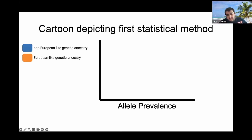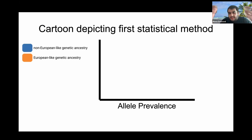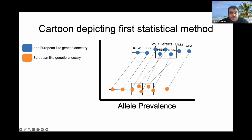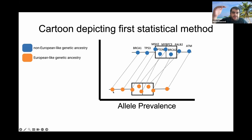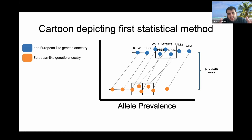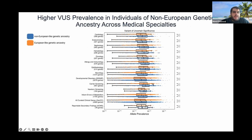The method we're using is calculating allele prevalence — the clinical definition of prevalence, which is the incidence of something over the total number of cases. In this case, it's the incidence of the VUS allele divided by the total number of possible alleles, calculated on a gene-by-gene basis. In blue are individuals of non-European-like ancestry, in orange are individuals of European-like ancestry. We use a matched-pairs Wilcoxon sign-rank test with Bonferroni correction. Unsurprisingly, there is a higher VUS prevalence in individuals of non-European genetic ancestry across medical specialties.